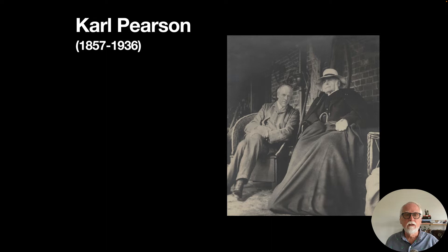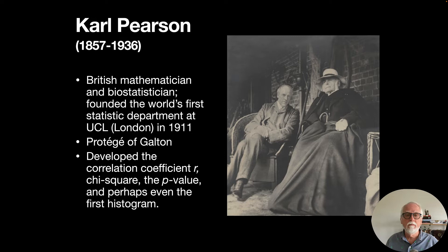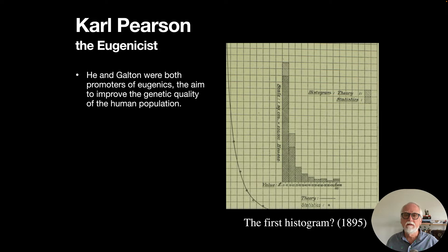We also need to mention Galton's protege Karl Pearson, who lived from 1857 to 1936. Pearson was a British mathematician and biostatistician who founded the world's first statistics department at UCL in London in 1911. He developed the correlation coefficient r, the chi-square, the p-value, and perhaps even the first histogram.